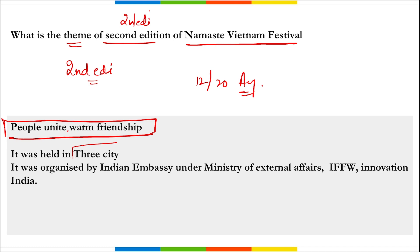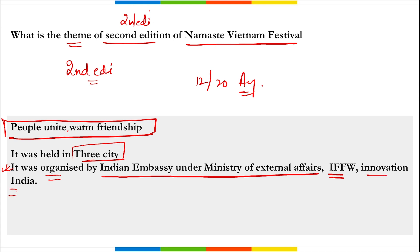The 2nd Namaste Vietnam Festival was organized by the Indian Embassy under the Ministry of External Affairs, IFFW (Indian Film Festival Worldwide), and Innovation India. These three organizations jointly hosted this festival.